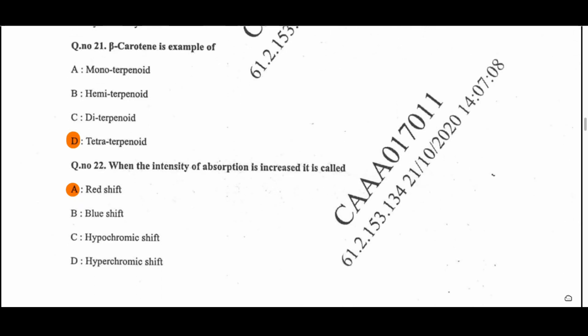Question 21: Beta-carotene is an example of a tetraterpenoid — this is the class of terpenoid to which beta-carotene belongs. Question 22: When the intensity of absorption is increased, it is called a bathochromic shift, also known as a red shift. Option A is the correct option.